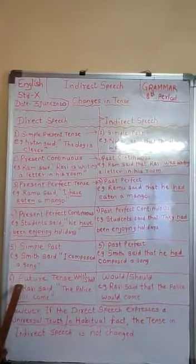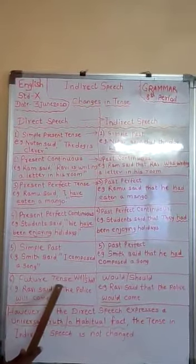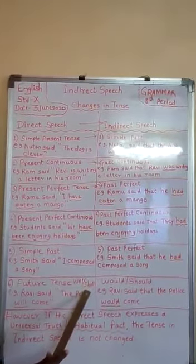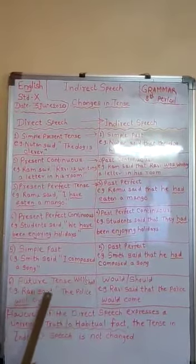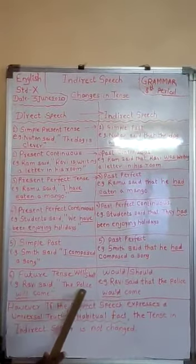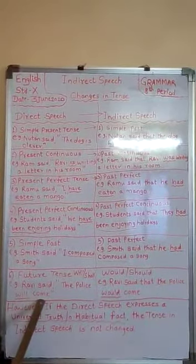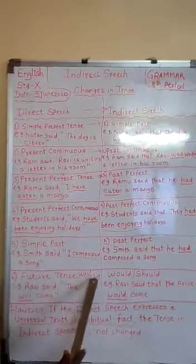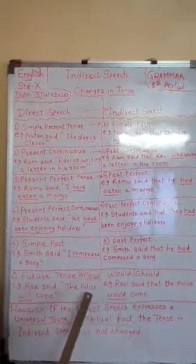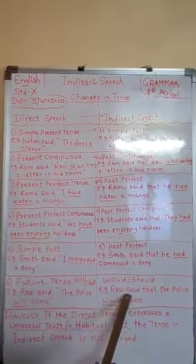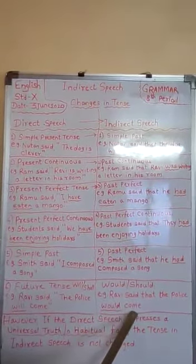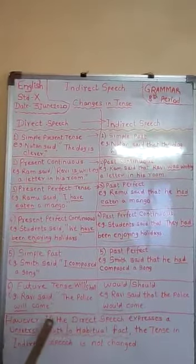The sixth tense: future tense, in which we use 'will' or 'shall' as helping words. For example: Ravi said, 'The police will come.' In indirect speech, 'will' changes to 'would' and 'shall' changes to 'should.' So: Ravi said that the police would come.